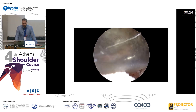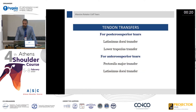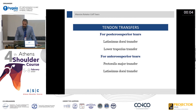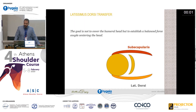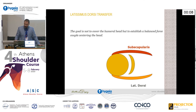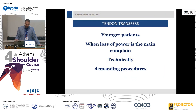The last option is tendon transfer, indicated for posterosuperior and anterosuperior tears. Latissimus dorsi transfer, lower trapezius transfer, and pectoralis major transfer are the most common. The goal is not to fully cover the humeral head, but to create a balanced force between the anterior cuff, the subscapularis, and the transferred tendon, thereby centering the head in the glenoid. We recommend tendon transfers in younger patients where loss of power — not pain — is the main complaint.